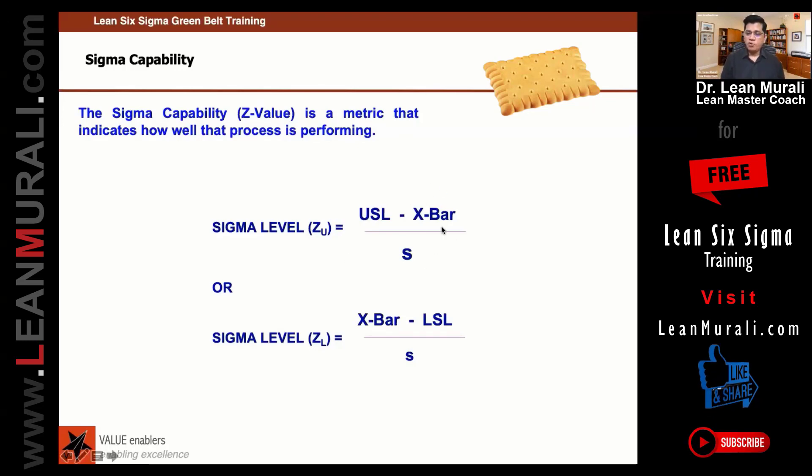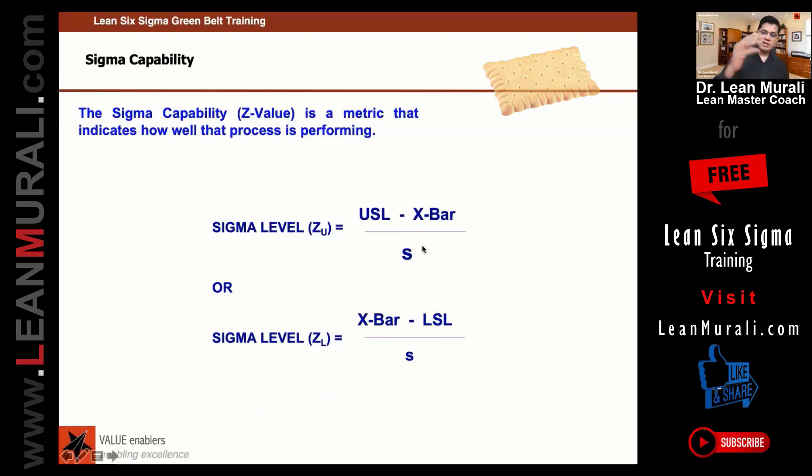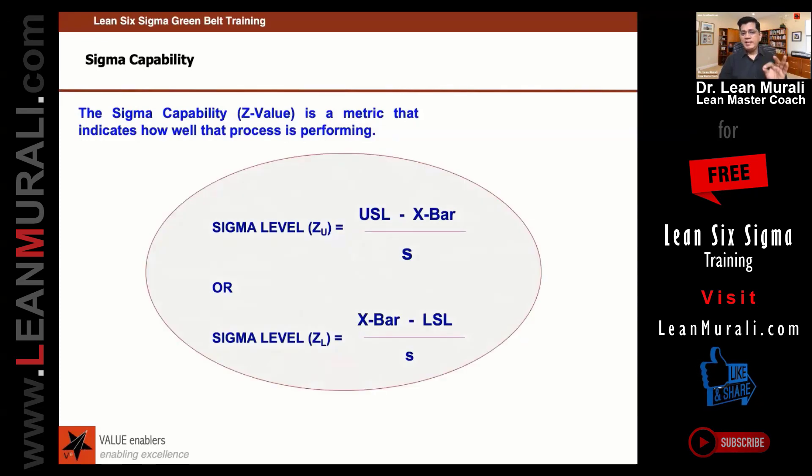And the average is, say, 49 grams. So upper specification limit minus x̄—x̄ is 49 grams and upper specification limit is 52 grams—so 52 minus 49, or 49 minus 48, divided by whatever standard deviation comes from that formula. We're going to see some examples of this, don't worry. We'll calculate the sigma levels using this formula. Now, calculating the sigma level and calculating the process capability is almost the same—the only difference is three standard deviations.